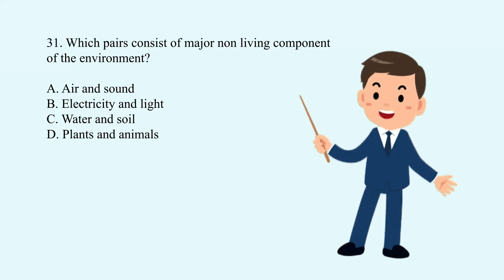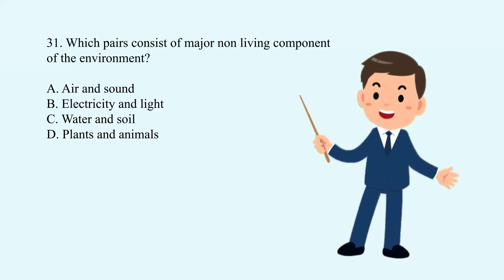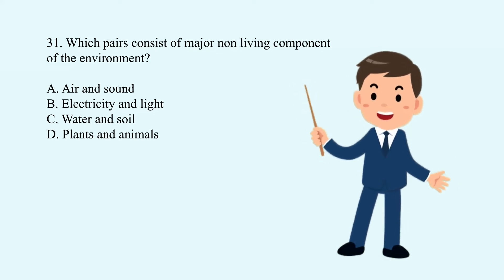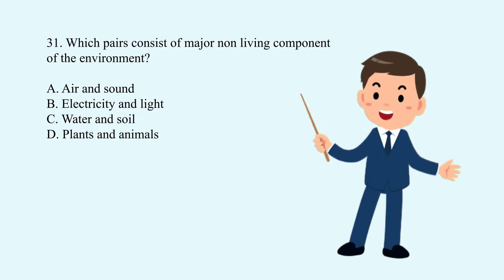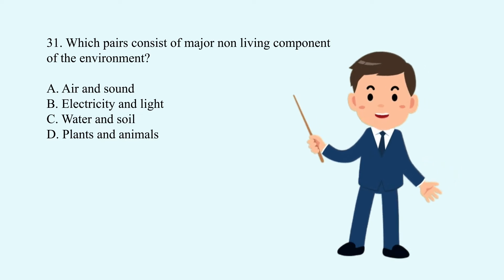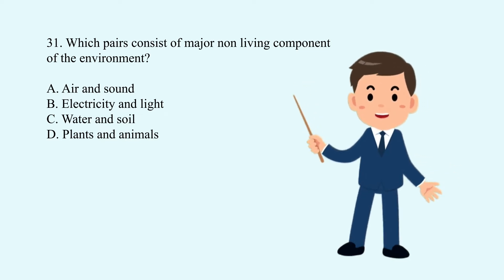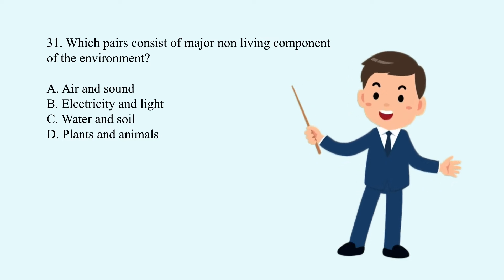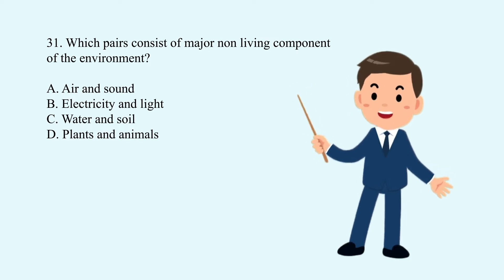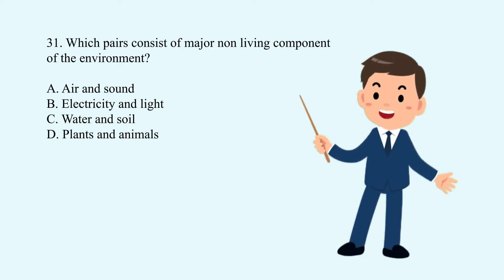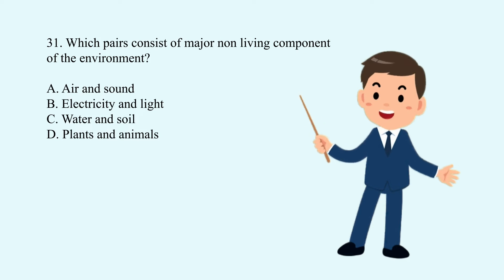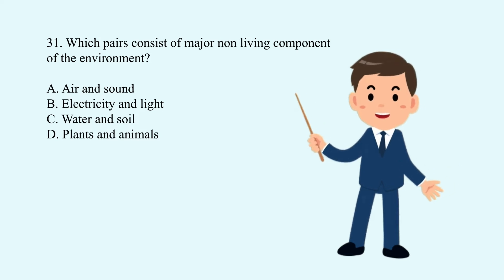Question 31. Which pairs consist of major non-living components of the environment? A. Air and sound. B. Electricity and light. C. Water and soil. D. Plants and animals.